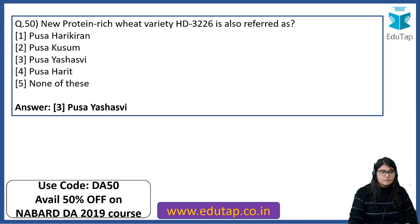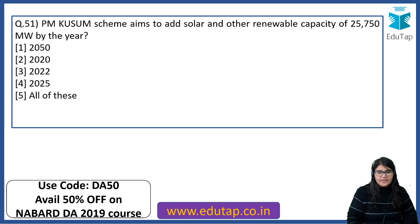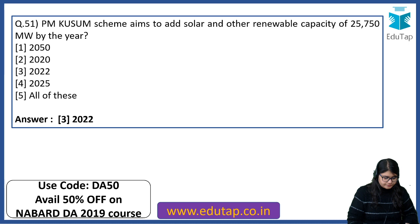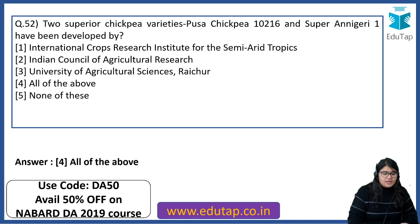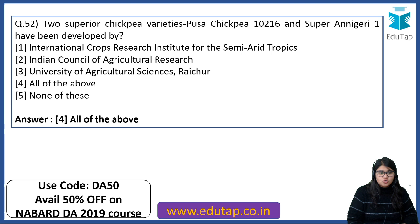PM Kusum scheme aims to add solar and other renewable capacity of 25,750 MW by which year? The right answer is by the year 2022. Two superior chickpea varieties, Pusa Chickpea 10216 and Super Anigeri 1, have been developed by which institute? The right answer is all of the above — all organizations are involved in developing these two superior chickpea varieties.